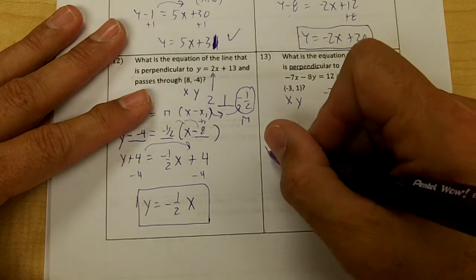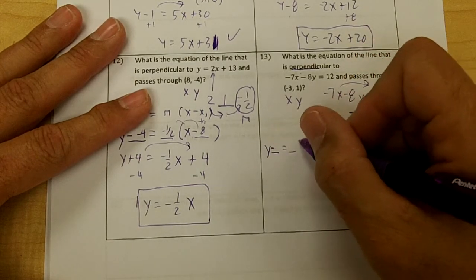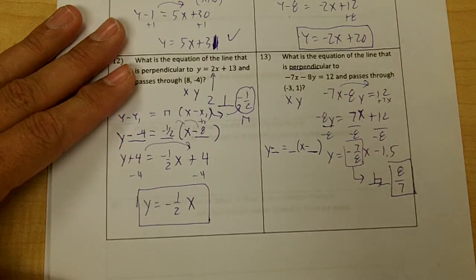Okay, so let's write down y minus blank equals blank (x minus blank). This is going to be a big fraction here.